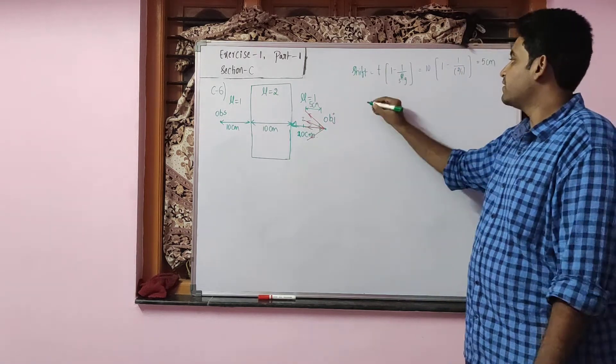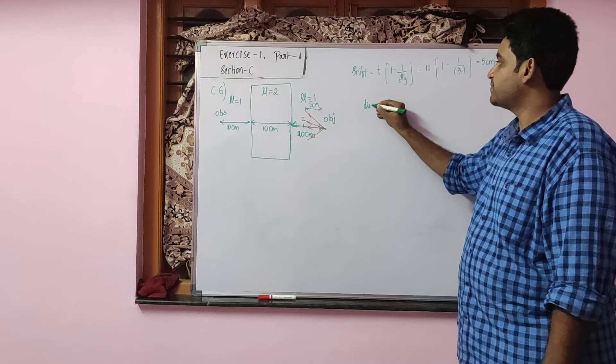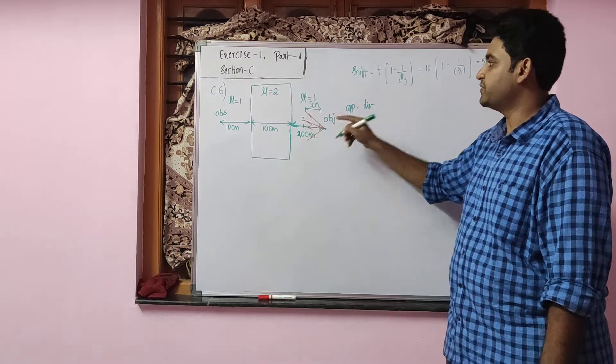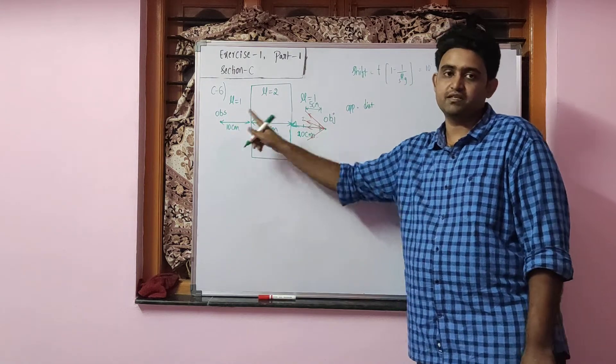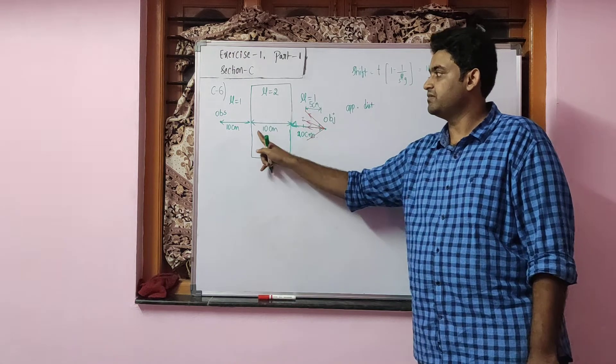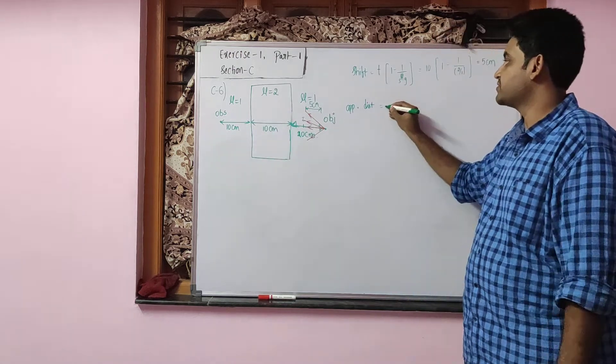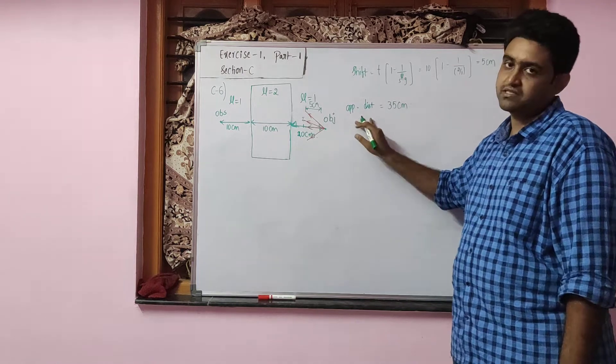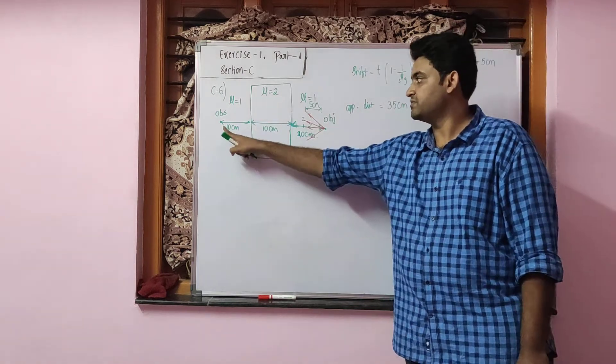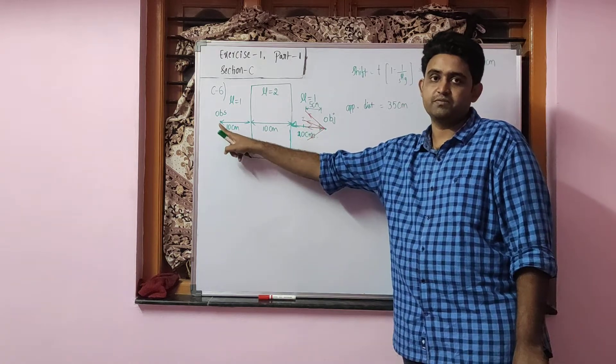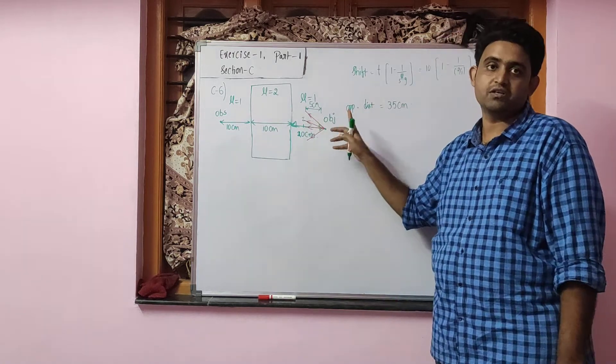So the total apparent distance between the object and the observer is going to be 15 plus 10 plus 10, which equals 35 cm. Apparent distance is the distance between the observer and the image, while actual distance is the distance between the observer and the original object.